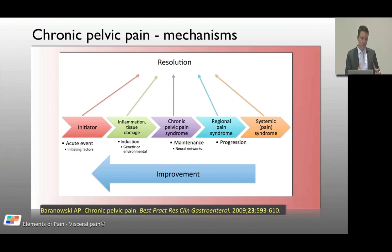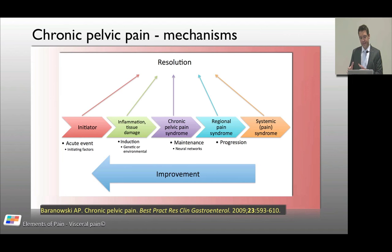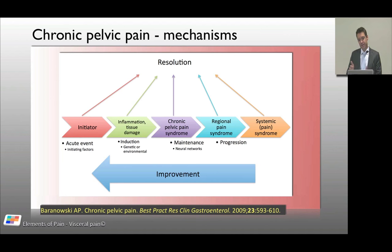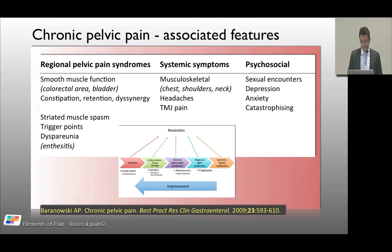Chronic pelvic pain is a changing process. An acute initiating event leads to tissue damage and inflammation. Depending on genetic and environmental factors, this can lead to chronic pelvic pain syndrome. Within the pelvis, this can lead to regional pain syndromes and then progress to systemic syndromes — a whole-body pain phenomenon. One stage can lead to the next, but at any point resolution is possible, and with appropriate management you can move back from more advanced to less advanced stages.